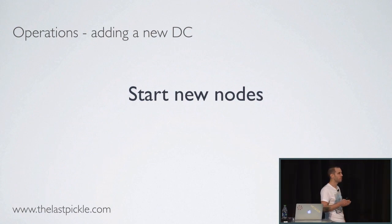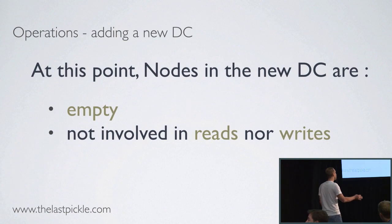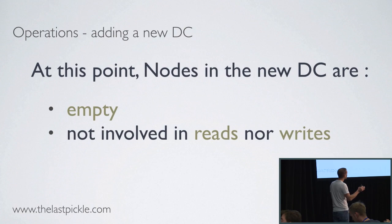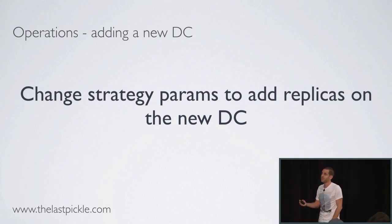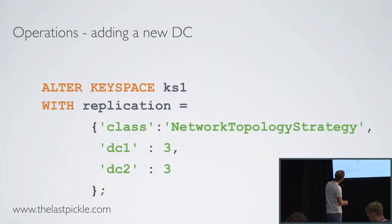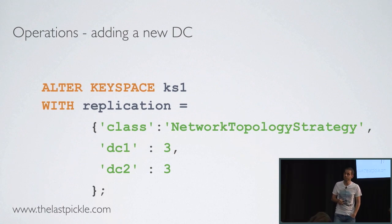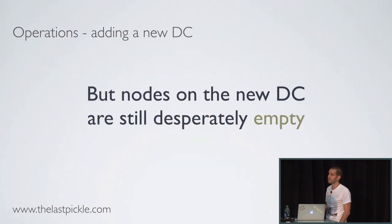Then you can start your new nodes in the fresh new DC. At this point, the nodes are empty because we've disabled bootstrap and because we didn't set replicas on this DC, and they are not involved in reads or writes. Now we can change the strategy parameters to add replicas on the new DC. Before moving on, you want to make sure your traffic is restricted to DC1 or you are using Quorum, otherwise your apps will start communicating using DC2 to get answers when it is still empty.